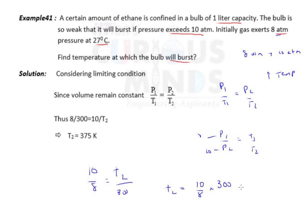Of course T2 will be more than T1. So the answer comes out to be 375 Kelvin.